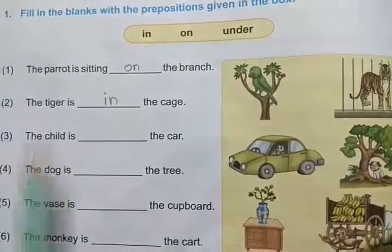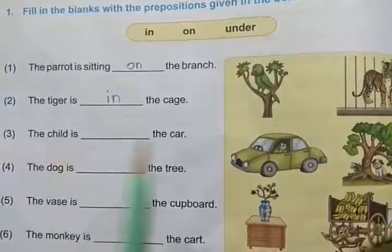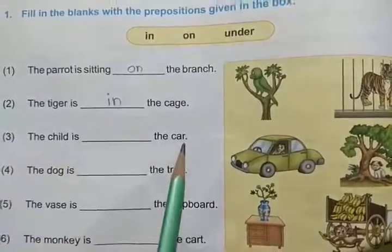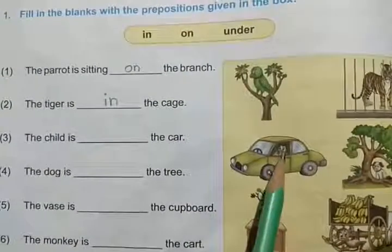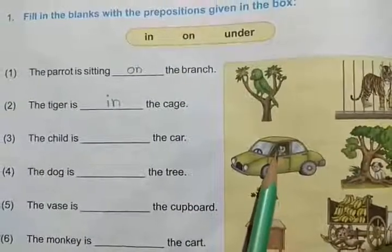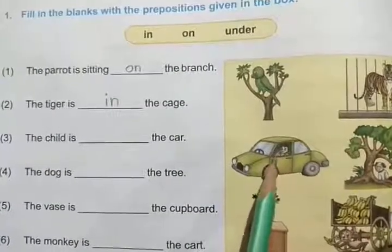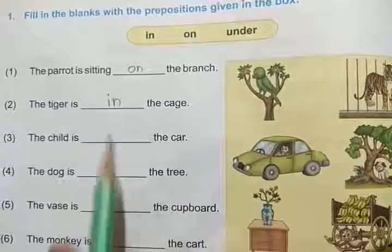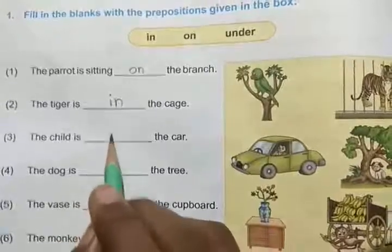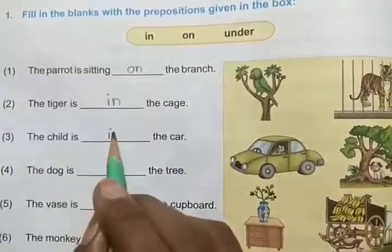Third one: The child is dash the car. The child is — in, on, or under? In. Very good.